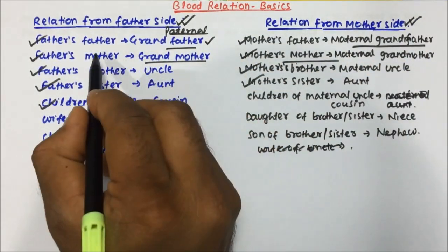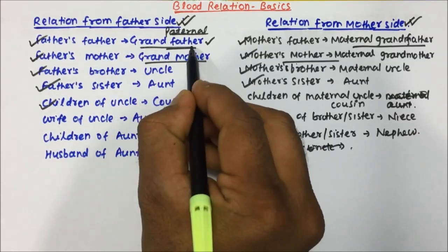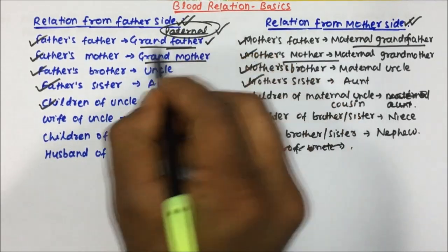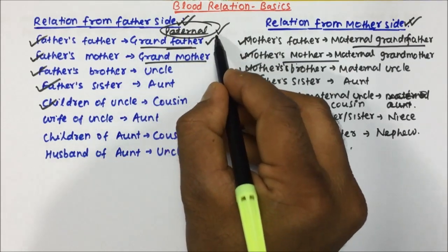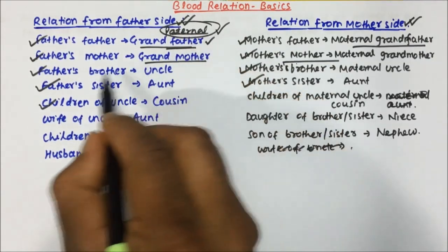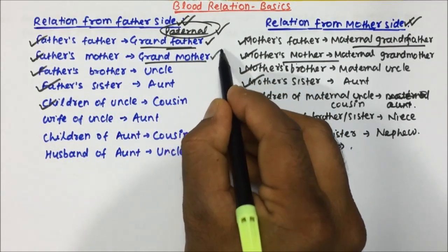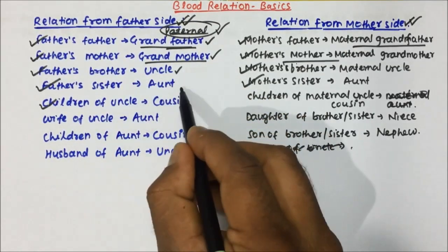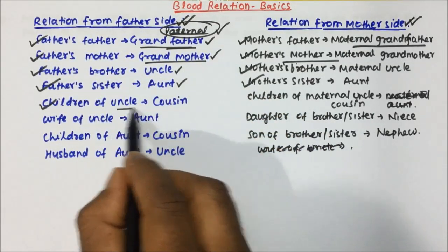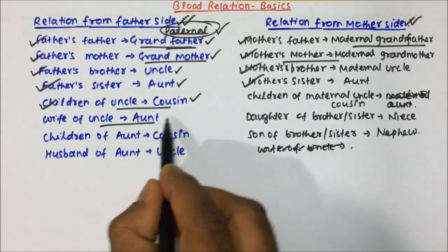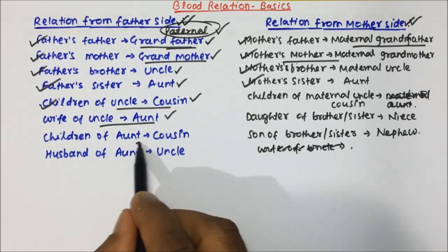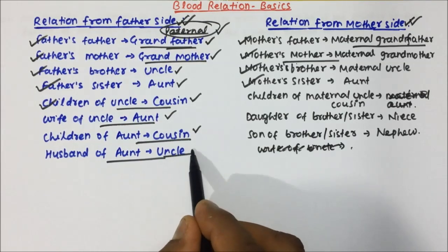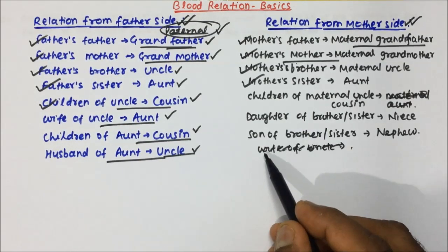From father's side — we call it paternal. Father's father will be grandfather, or you can also say paternal grandfather. Father's mother will be grandmother, father's brother will be uncle, father's sister will be aunt. Children of uncle will be cousin, wife of uncle will be aunt, children of aunt will be cousin, and husband of aunt will be uncle.